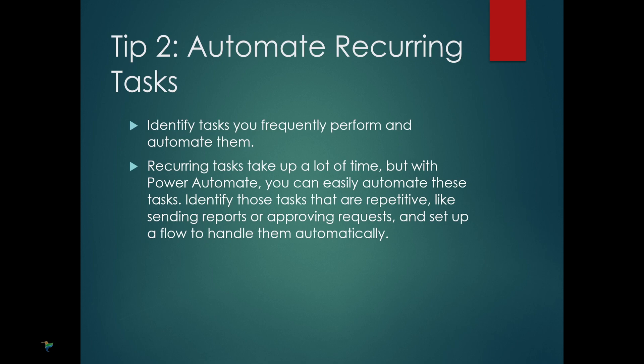Next, let's talk about how you can save time by automating recurring tasks with Power Automate. We all have those tasks we do over and over again, like sending reports or approval requests. Power Automate can take care of these for you. All you need to do is identify those repetitive tasks and set up a flow to handle them automatically. For example, you can generate a report at the same time every week or automatically approve requests based on certain criteria.